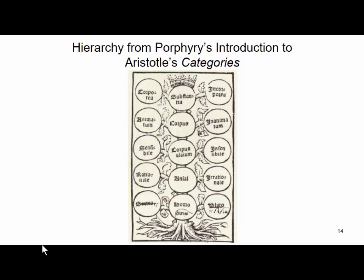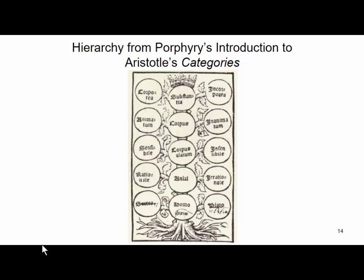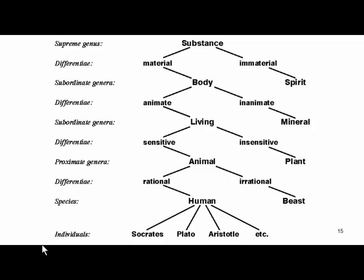This is the fundamental hierarchy underlying Aristotle's categories. There are substances — which means objects, things — which are either material or immaterial. Material substances are bodies. Some bodies are animate, called living bodies. Some living bodies are sensitive — animals. Some animals are rational, and they're called humans. And then we have instances of humans, all of whom are Greek.